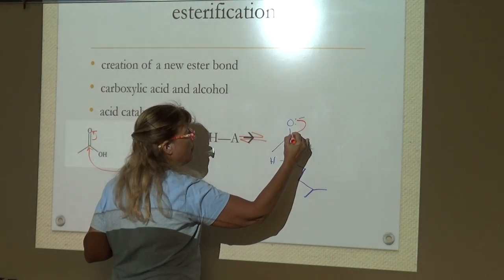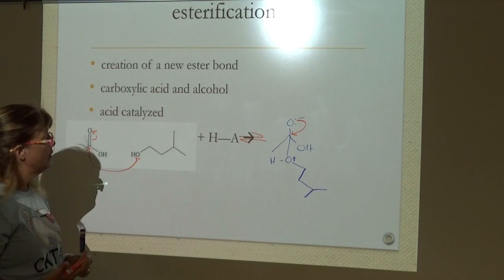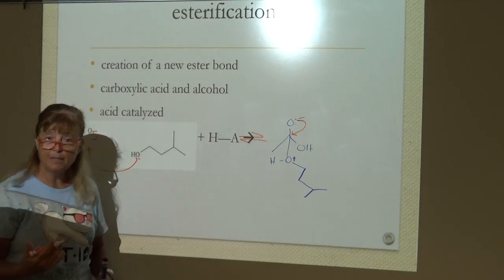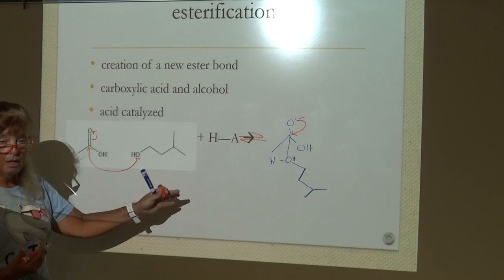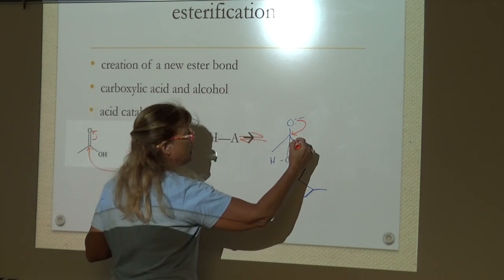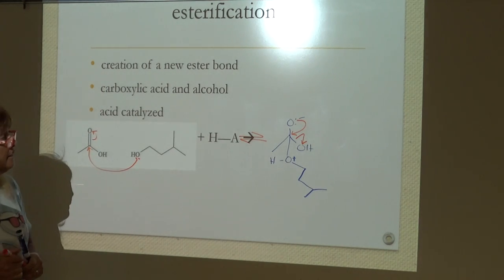We're going to take these electrons, bring them right back down. Here again, that carbon's going to have to let go of something. If it's the bond to the positively charged oxygen, we're right back where we started in equilibrium. But eventually, it's the hydroxy that goes.